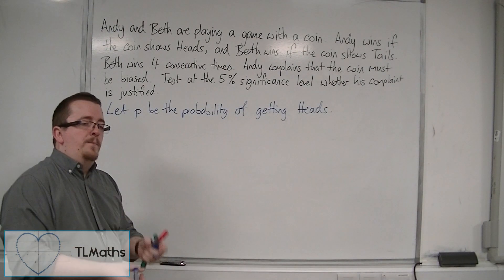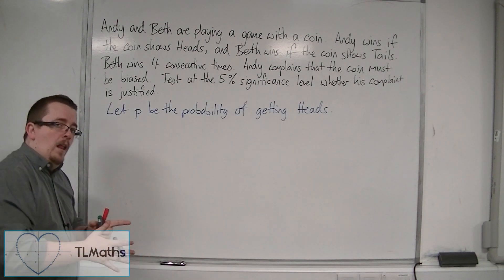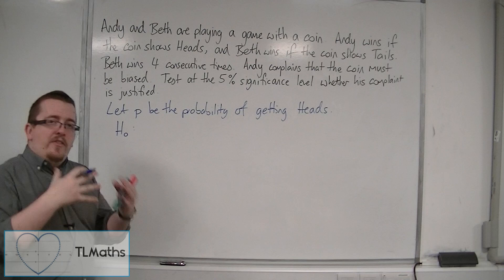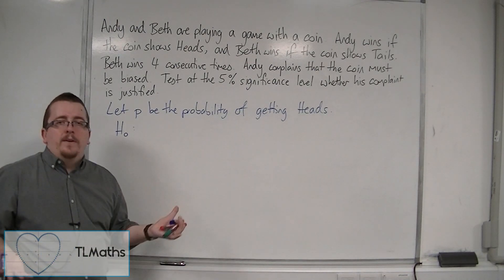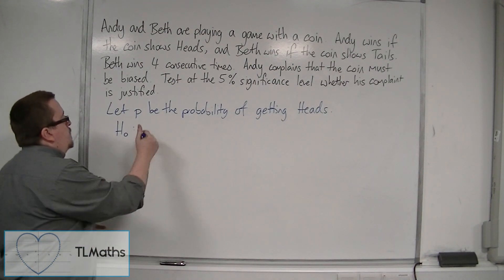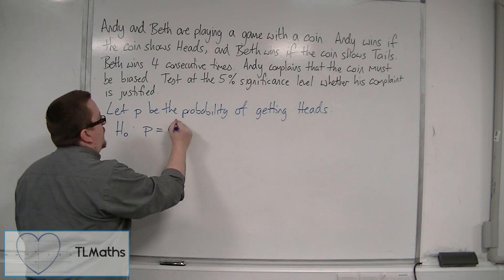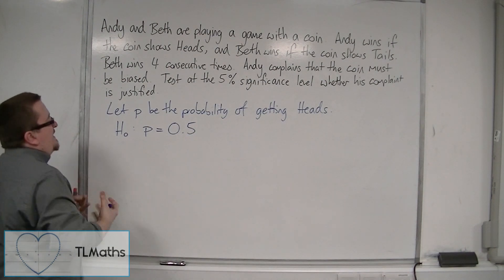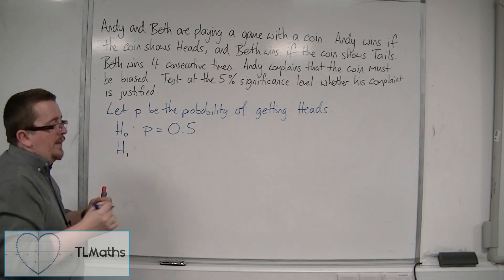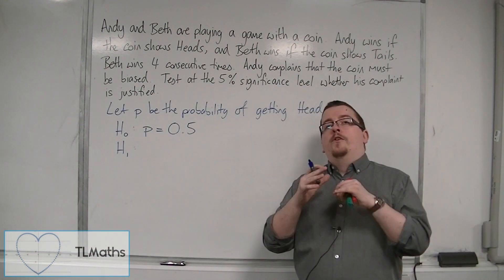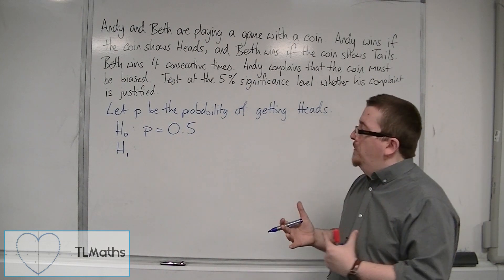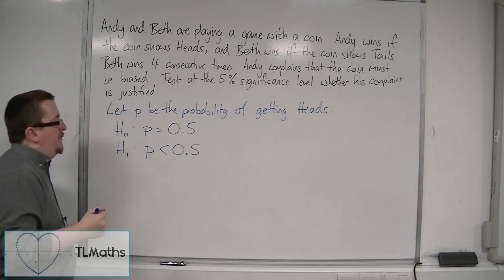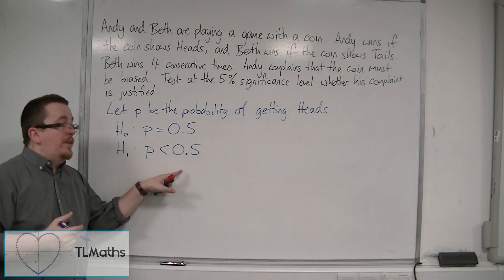We then set up what I talked about in the previous video, the null and alternative hypotheses. The null hypothesis is the devil's advocate position, and that says the coin's probably going to be fair, so we're going to set P to be one-half, or 0.5. But Andy is claiming that the probability of getting heads is less than the probability of getting tails. So Andy is suggesting that the probability is actually less than 0.5. So the alternative hypothesis is P is less than 0.5.